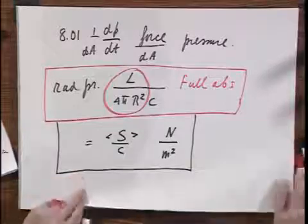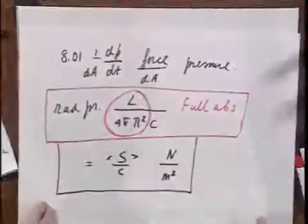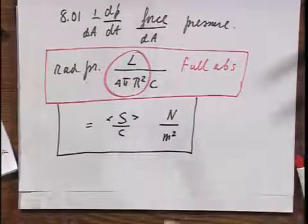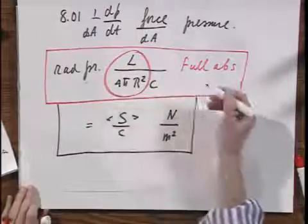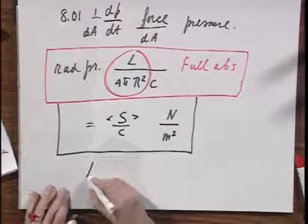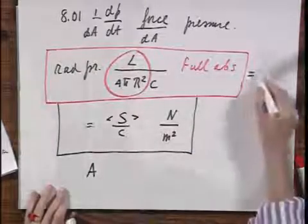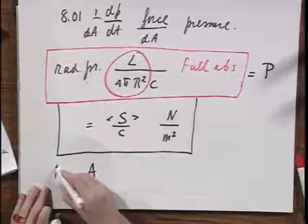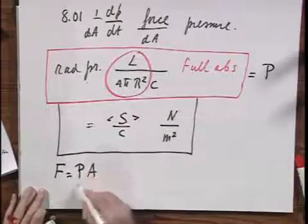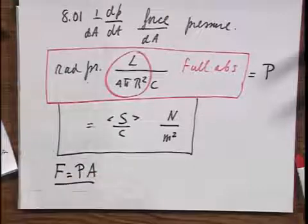So the radiation pressure, when we have full absorption, is given by this quantity. And so if this radiation pressure acts on a surface which has area A, and if I call this radiation pressure P, then the radiation force, the force due to radiation pressure, would be the radiation pressure times the area A.